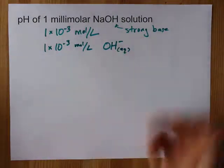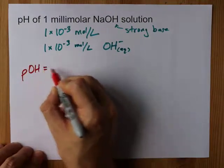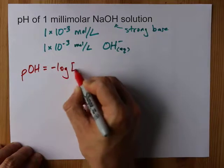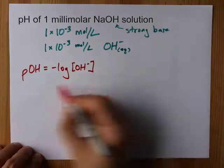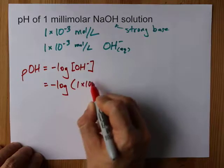Hopefully that already tells you what you need to know. Because the pOH of a solution is the negative log of the OH- concentration, that's the negative log of 1 times 10 to the negative 3.